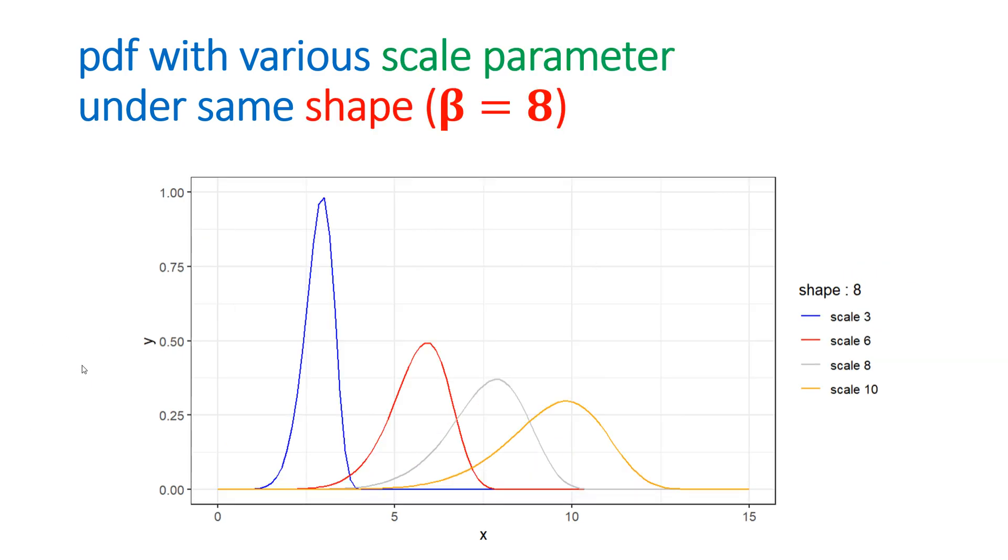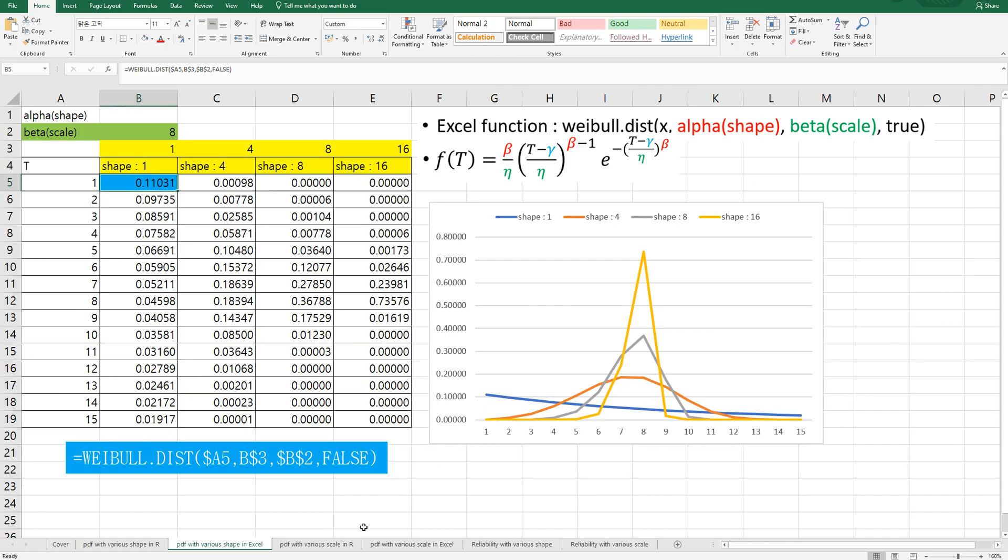This is PDF while changing scale parameter with fixed shape. Then we can see this PDF. As you can see, if you change scale from 3 to 10, it moves from left to right. But the highest probability goes down.